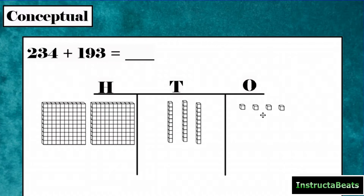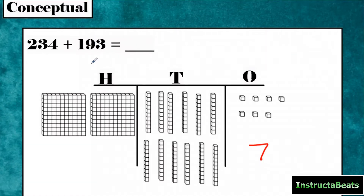Now I'm adding 193. Whenever we add, we want to start with the 1s place and then go right to left. So I need to add three 1s. You can see now I have seven in my 1s place — seven 1s, which is why I put a 7 in my 1s place. I'm starting with three 10s and I want to add nine 10s to that. But now I have a problem — I have more than 10 10s in my 10s place.